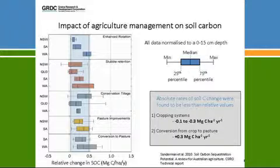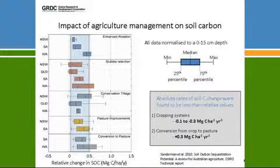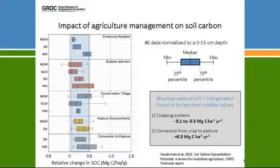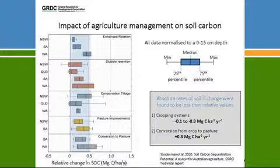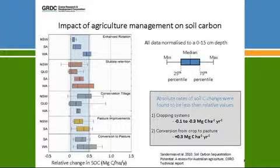Looking at the absolute rates — and there weren't very many studies where you could examine absolute rates, meaning changes through time — the data suggests cropping systems were still going backwards. They were losing carbon. They had positive relative changes because they were doing better than business as usual, but they still weren't sequestering carbon.